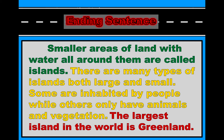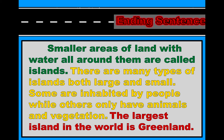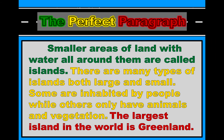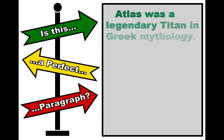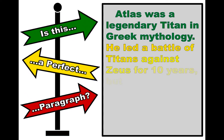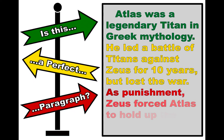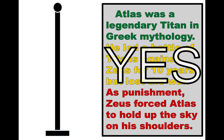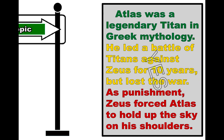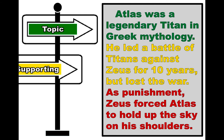Is this a perfect paragraph? Atlas was a legendary titan in Greek mythology. He led a battle of titans against Zeus for ten years but lost the war. As punishment, Zeus forced Atlas to hold up the sky on his shoulders. Is this a perfect paragraph? Yes — why? It has a topic sentence, it has supporting sentences, and an ending sentence.